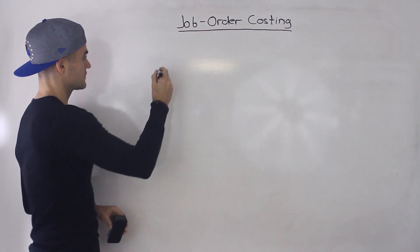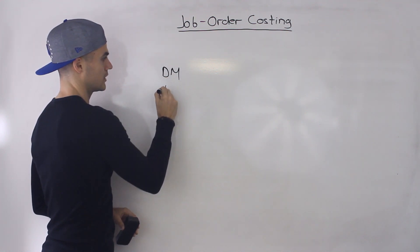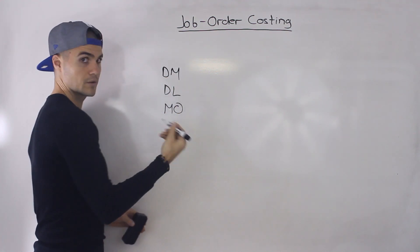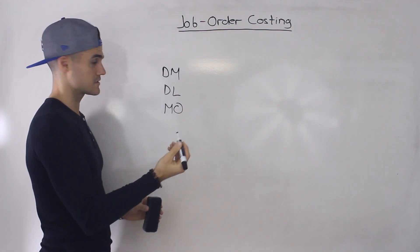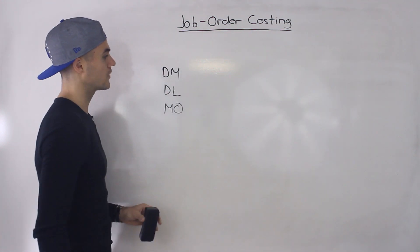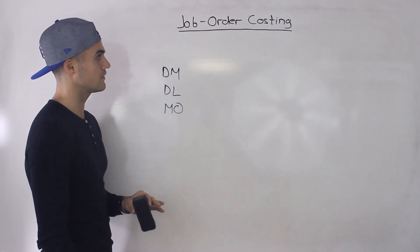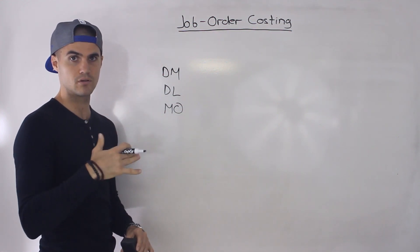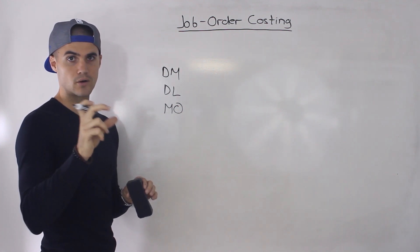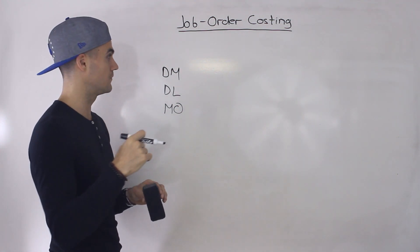The way this works is very similar to what we've been doing — we're going to be running into those three product costs: direct material, direct labor, and manufacturing overhead. I want to start off by bringing back the example from the applied overhead overview video.